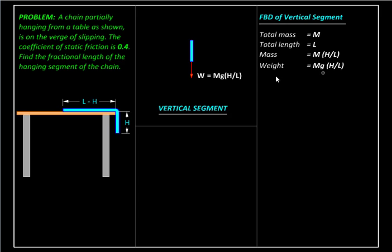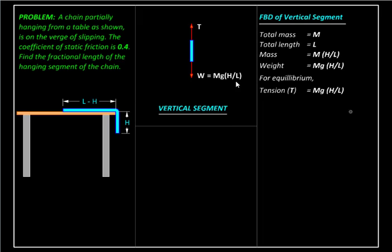This weight is not able to pull the chain down because it is held up by the connection at the table edge, which exerts a tension T in the upward direction. Since motion hasn't started, these two forces must be equal and opposite. For equilibrium, tension T equals Mg·H/L. This completes the free body diagram of the vertical segment.